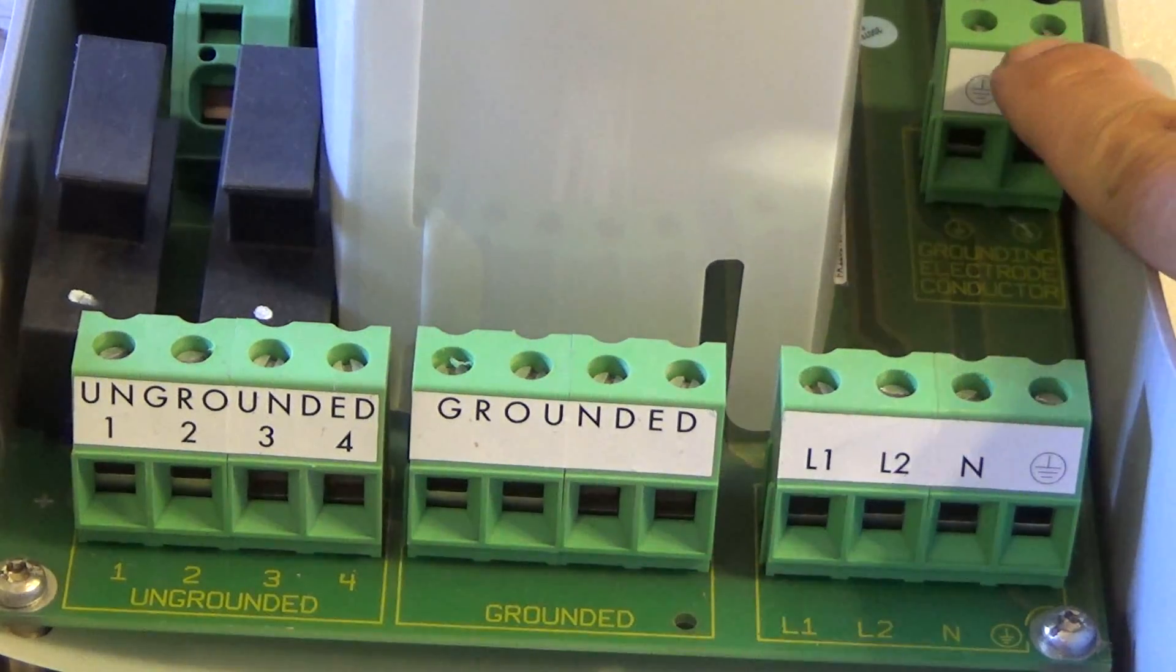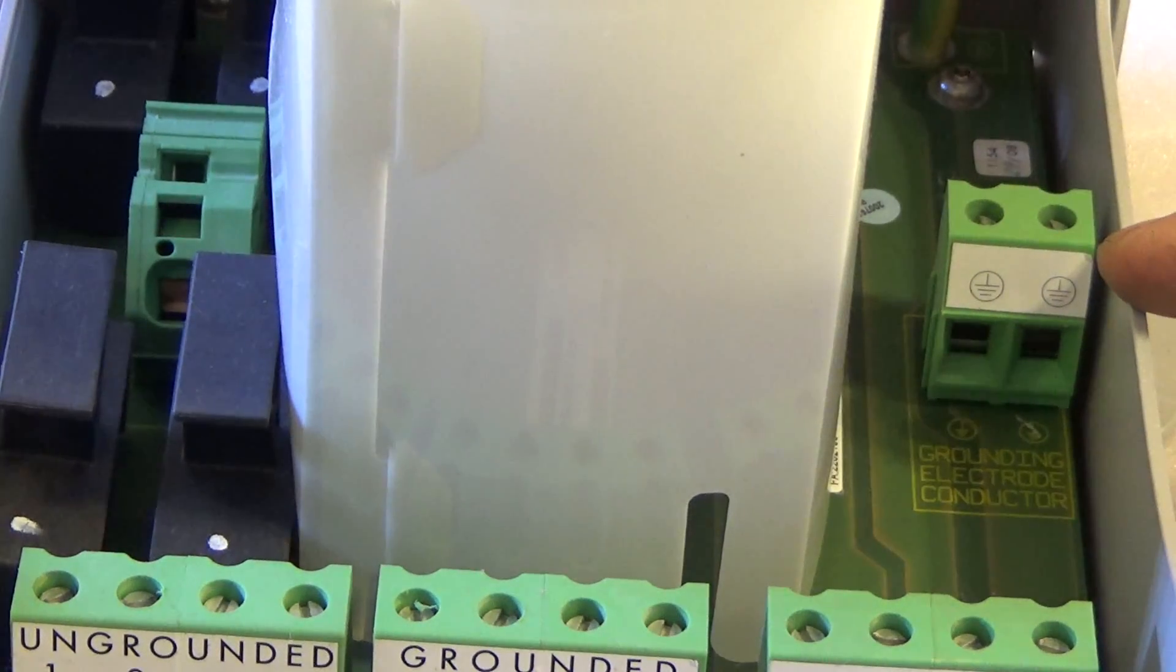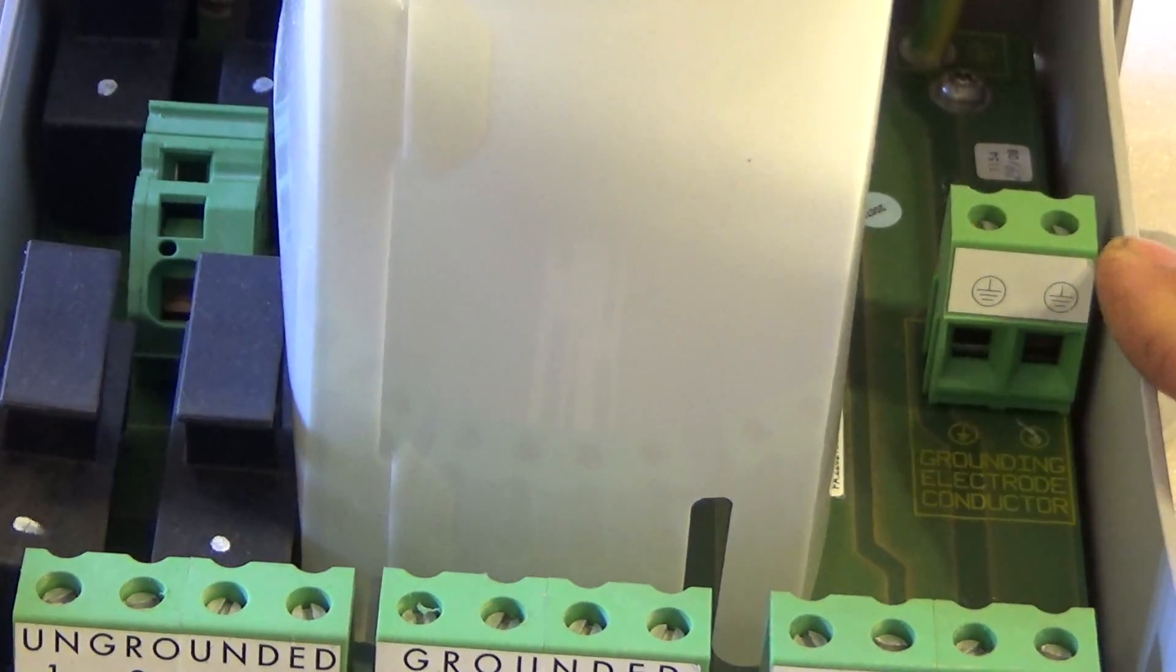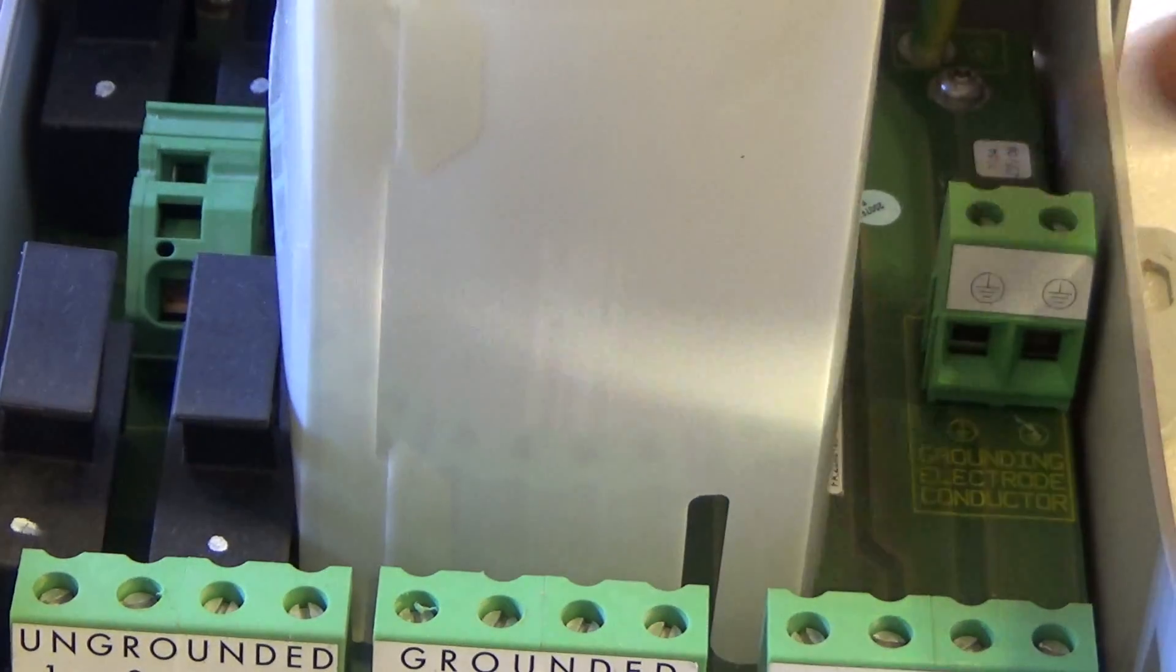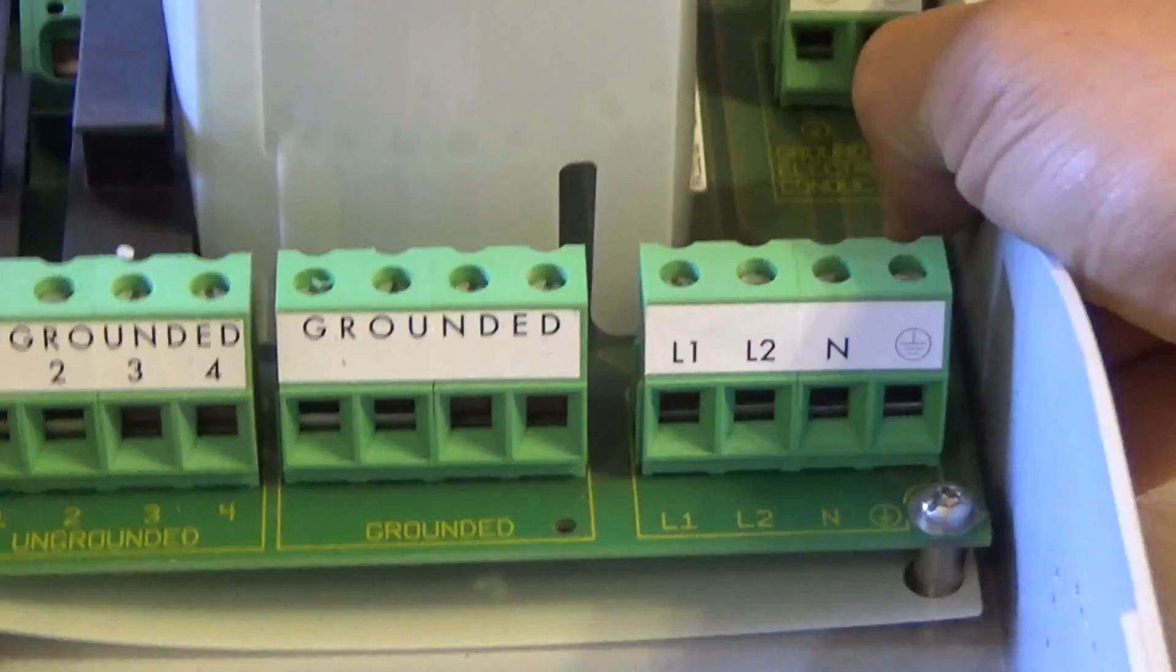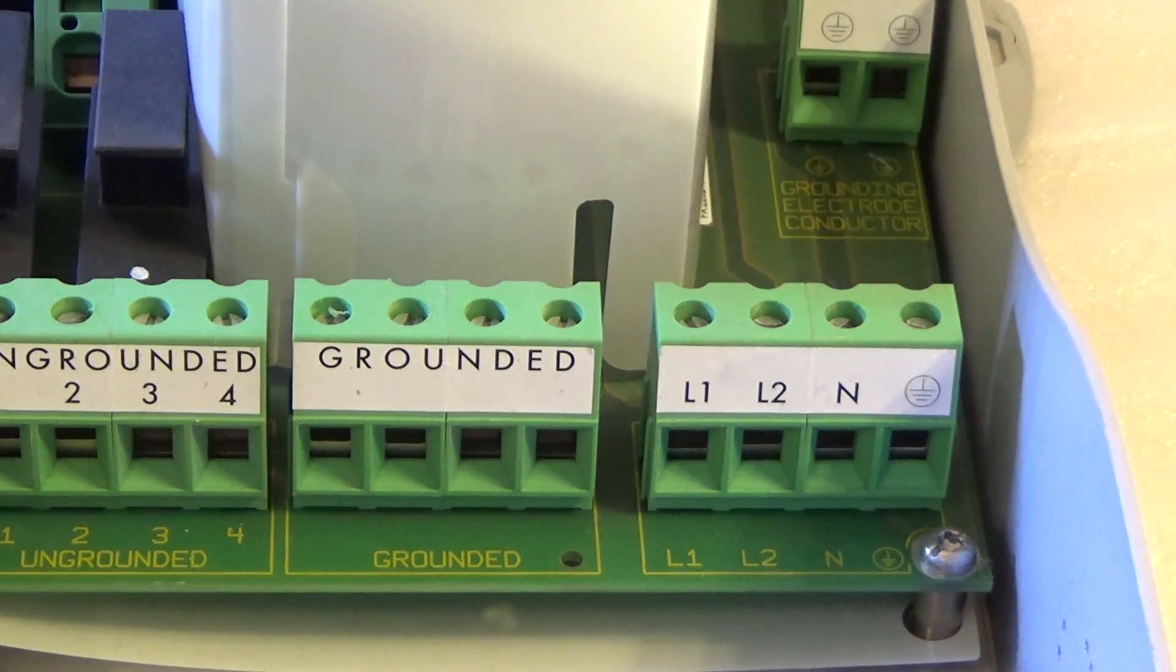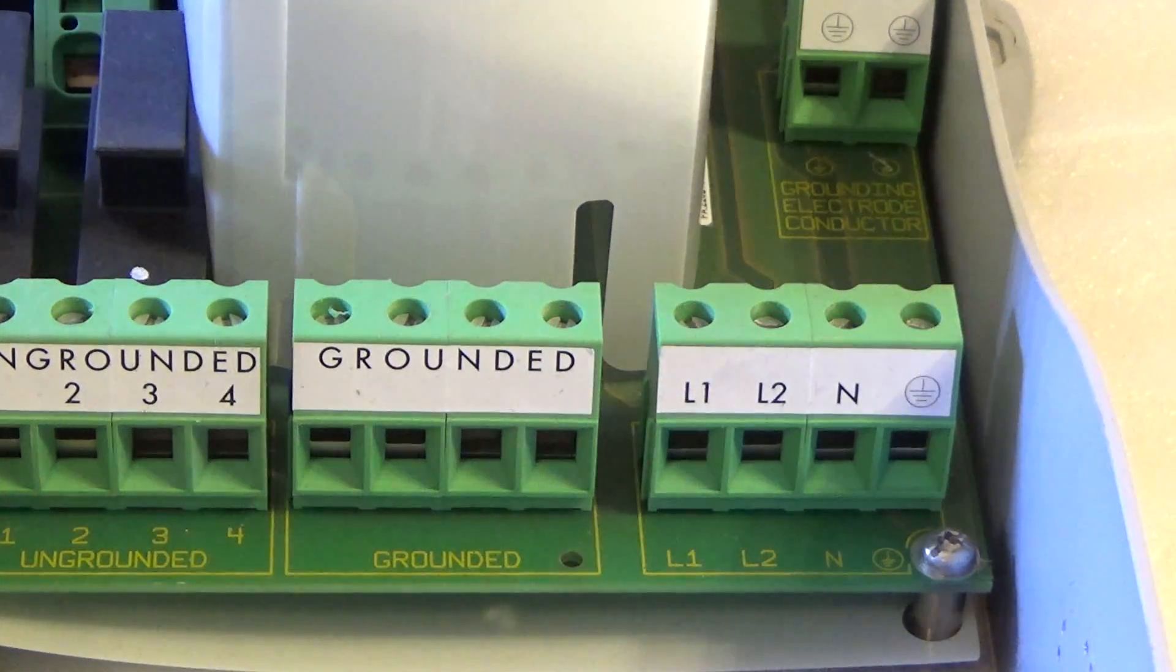On the top here, we also have another connection for ground. It's called ground electrode conductor. This is when you have an electrode that is pounded on the ground that you want to connect directly onto this. But usually, I don't really need to connect to this. All I have to do is connect to ground over here and that should be fine.